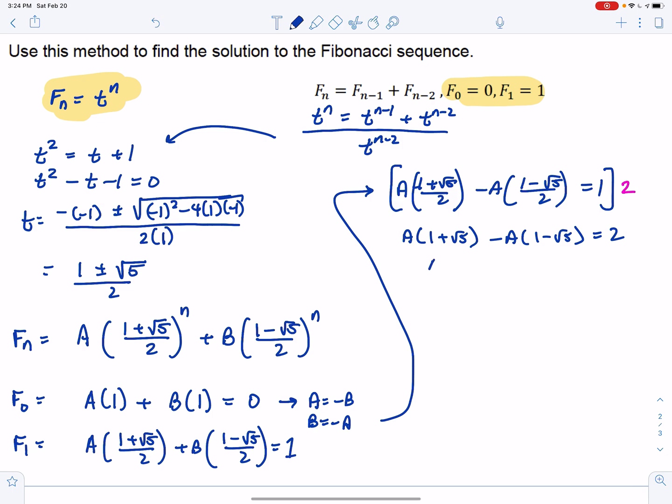So this leads me to A plus A root 5, minus A plus A root 5, equals 2. Oh, look at that. Those A's cross out. So we get 2A root 5 equals 2, which means A is equal to 2 over 2 root 5, which is 1 over root 5. And we've already established that B is the opposite of A. So that means B is negative 1 over root 5.